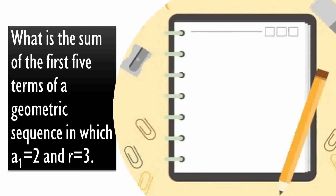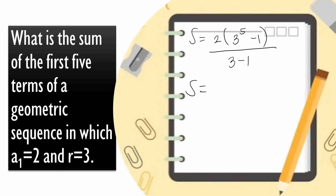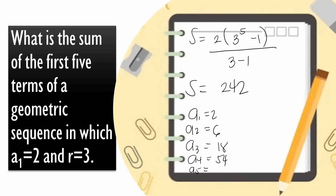What is the sum of the first five terms of a geometric sequence in which a sub 1 equals 2 and r equals 3? Using the formula S equals a sub 1 times r raised to n minus 1, over r minus 1: S equals 2 times 3 raised to 5 minus 1, over 3 minus 1, giving a sum of 242. We can verify: a sub 1 is 2, a sub 2 is 6, a sub 3 is 18, a sub 4 is 54, a sub 5 is 162, and 2 plus 6 plus 18 plus 54 plus 162 equals 242.